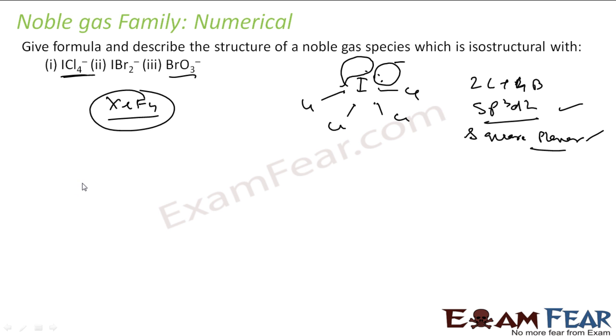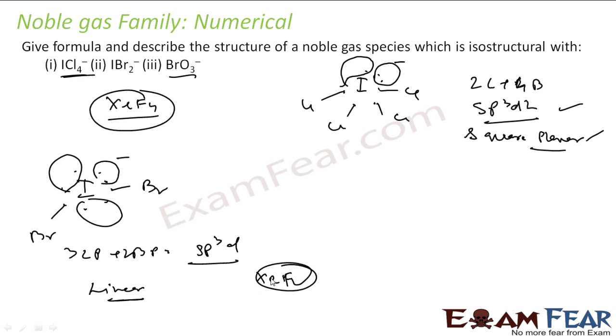The next one is IBr2-. You can take I, 7 electrons. Br2-, 1 Bromine and 1 Bromine and there's a minus. Let's put an electron here. There's a negative charge. So there's 1 lone pair, 2 lone pair, 3 lone pair. So it is 3 lone pair plus 2 bond pair. That is SP3D. So as per VSEPR theory, it is linear. So linear is XeF2. We have seen that shape of XeF2 is linear.